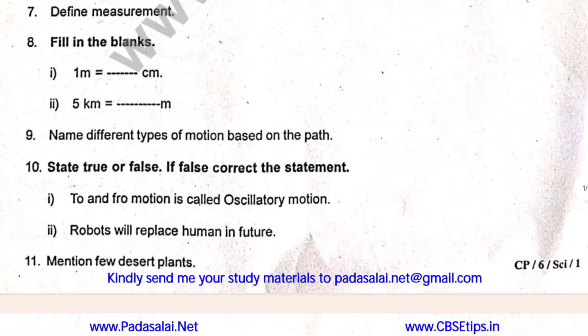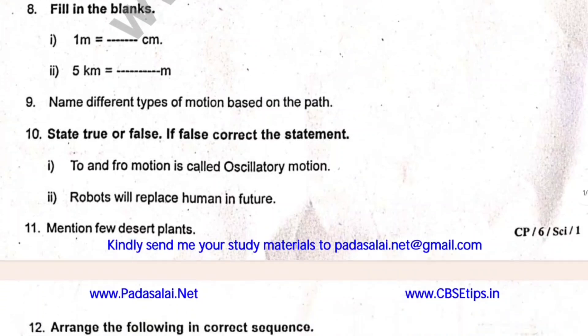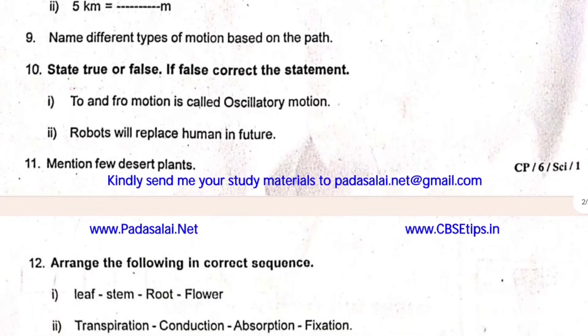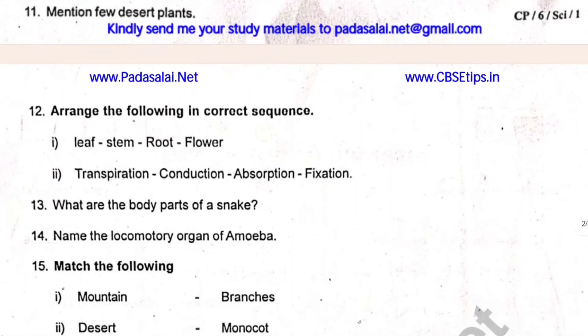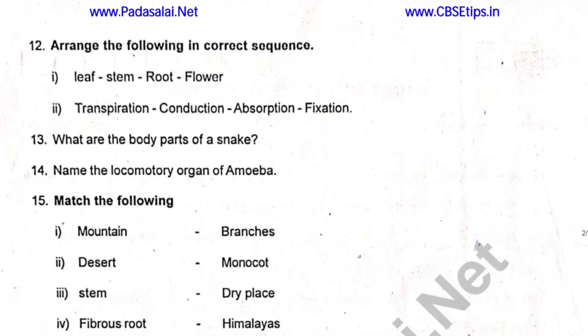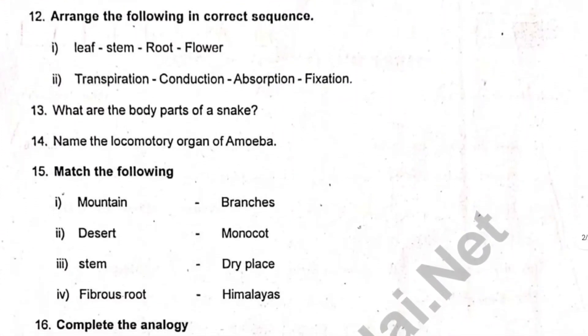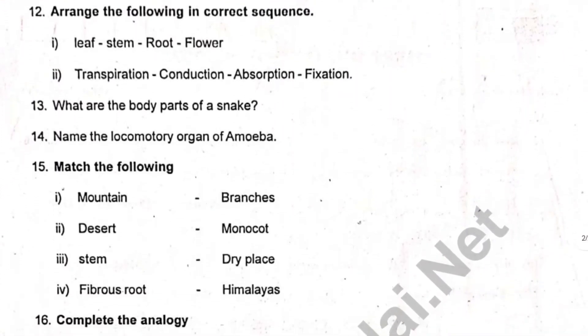Name different types of moss and birds on the path. True or false — health is easy. Mention a few desert plants. Arrange the following in the correct sequence.